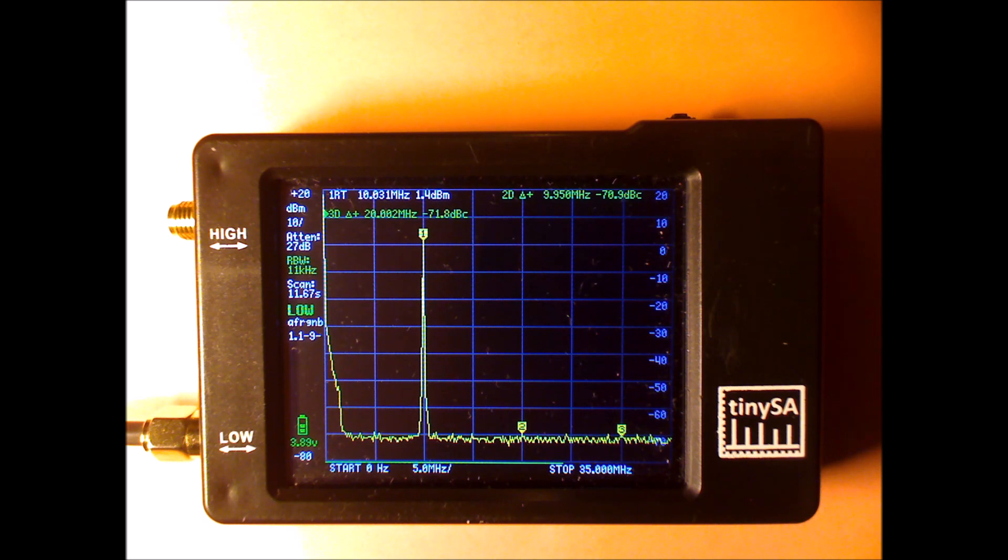That implies that if you have a very good signal generator, and you leave everything in automatic, except reducing the resolution bandwidth because you want to see a bigger dynamic range, then in all the automatic settings, you can see harmonics that are at, or you have a dynamic range available of 70 dB.